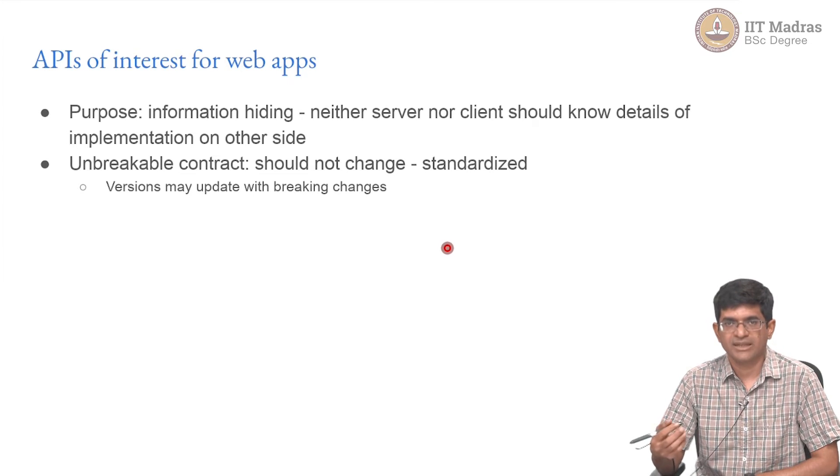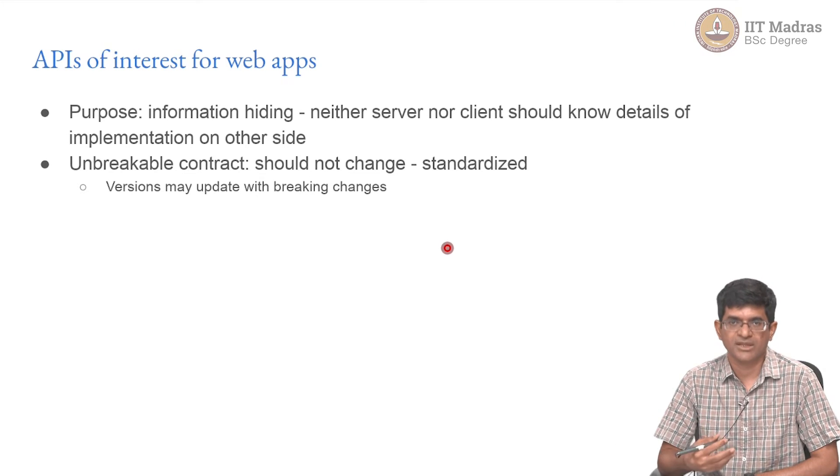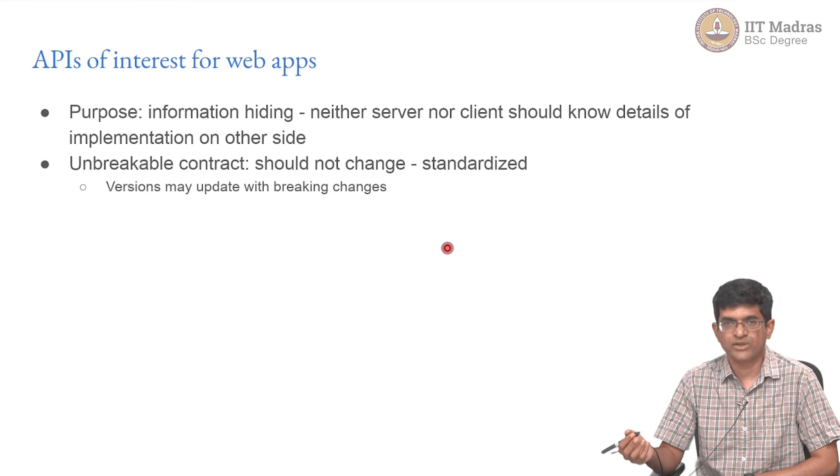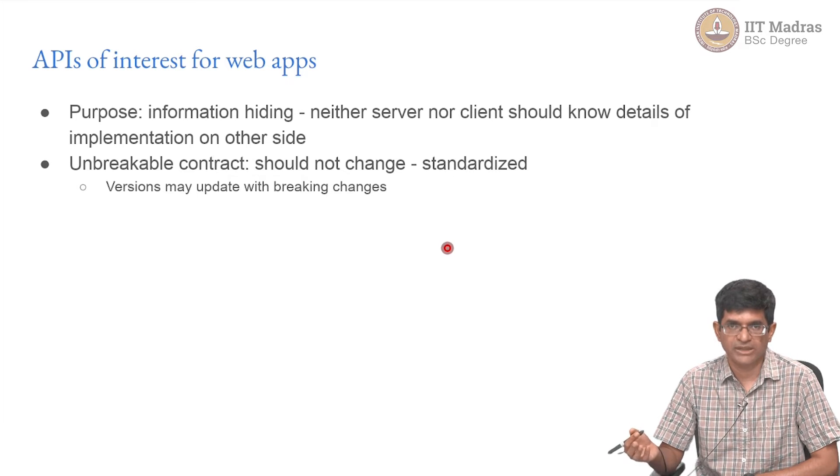This information hiding is something that allows a client to use the server without knowing how the server is actually functioning. The server can also send back information to the client without bothering about whether it is a mobile device or a desktop or what it is - it just gives the information as requested. Separation of concerns, in some sense, is a form of information hiding as well, and that is important for the development of web apps so that they do not break when something changes on one side or the other.